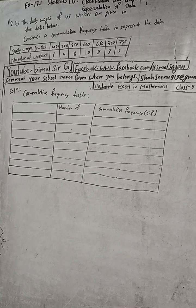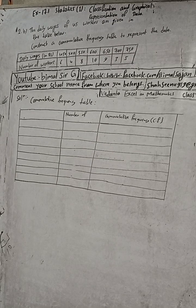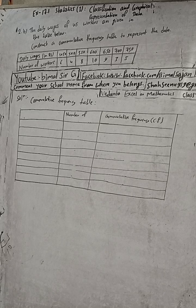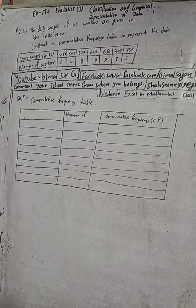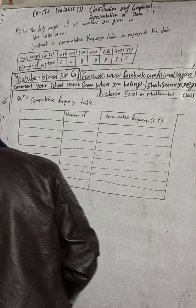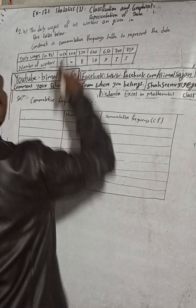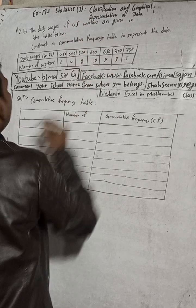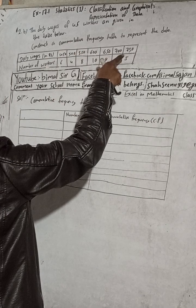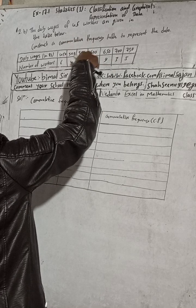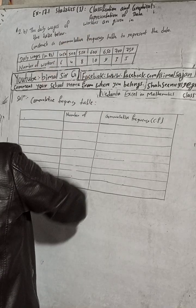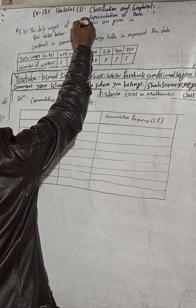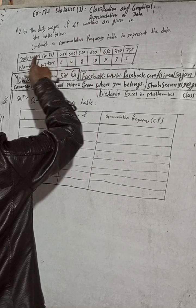This is question number 2b. I have already uploaded 2a and the table is the same table I have drawn. You can draw this table. The question 2b is: the daily wages of 45 workers are given in the table below.